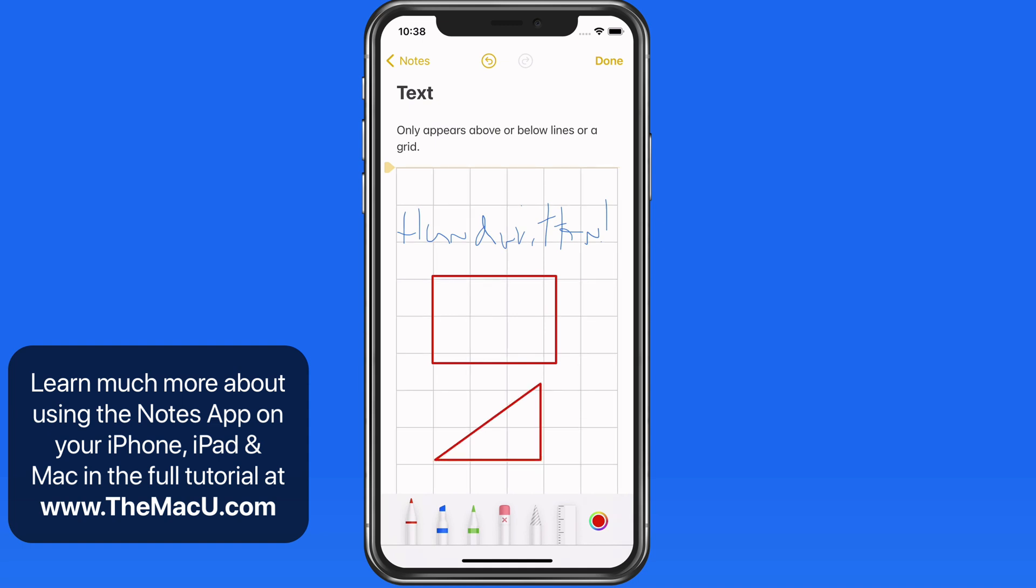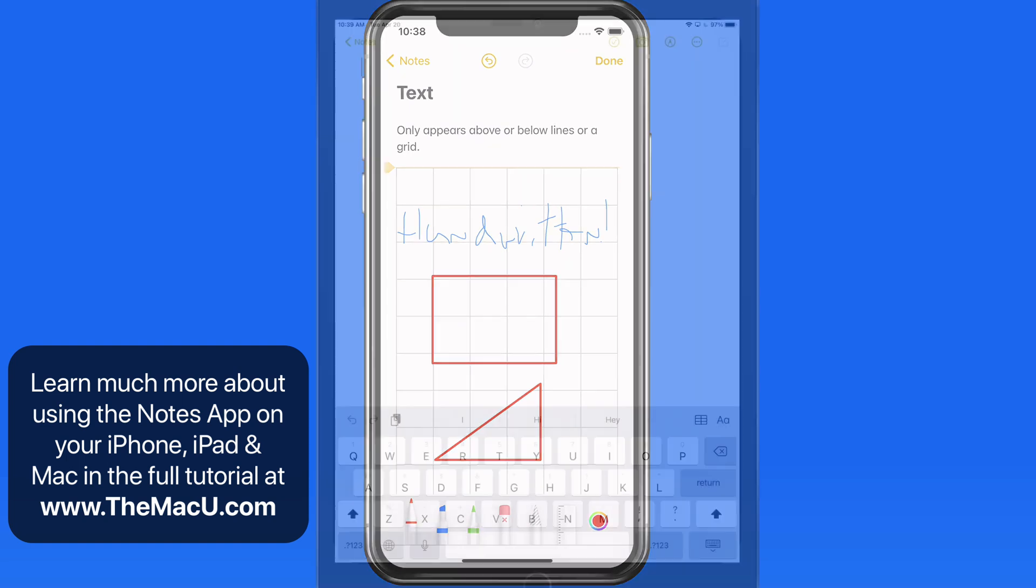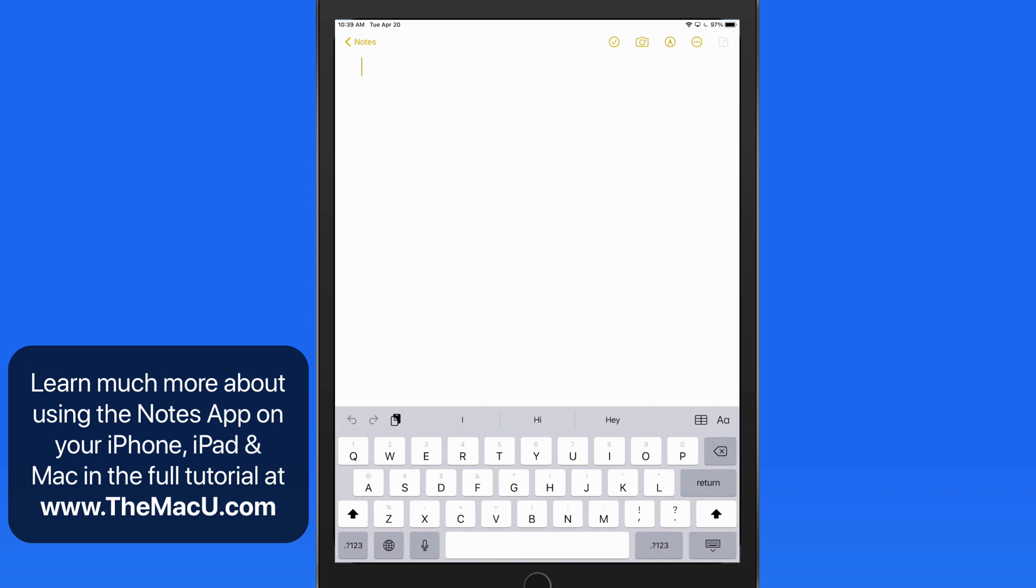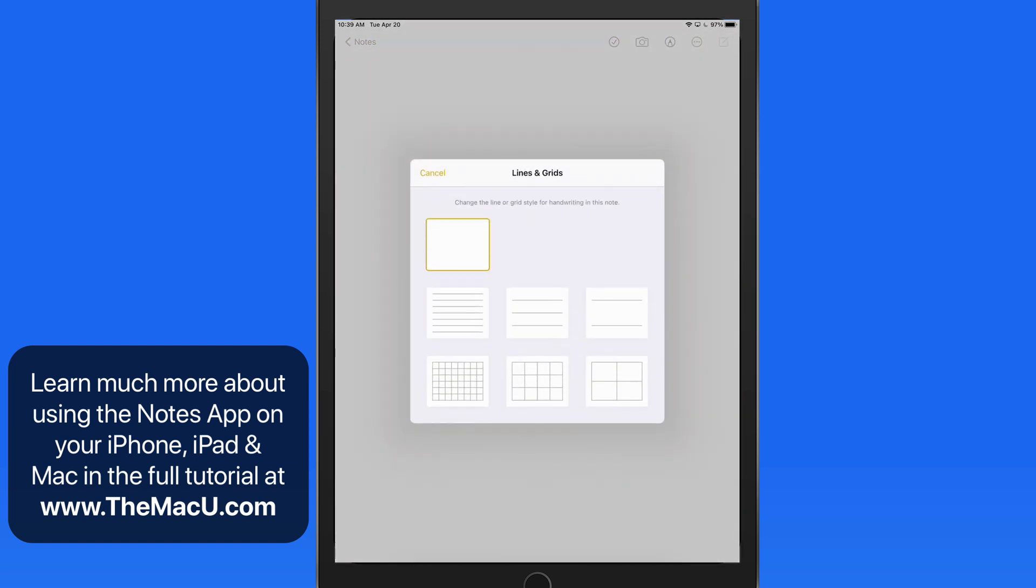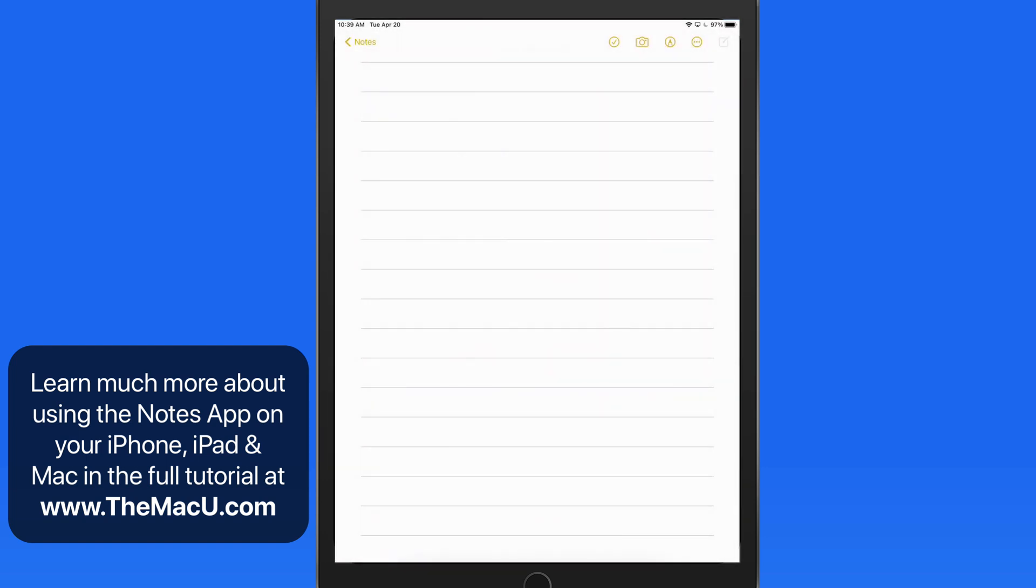Where the lines and grids option really can be helpful is on an iPad with an Apple Pencil. In this example, I'm going to use the iPad in portrait orientation, then create a new note with a set of lines. This essentially turns the iPad into a notebook.